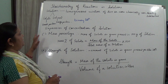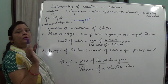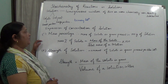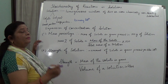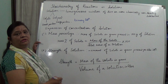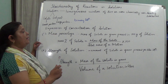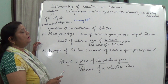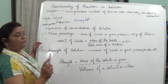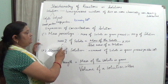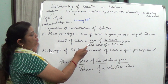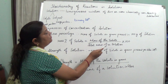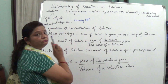Now we are going to see the expressions of concentration of solution. First is the mass percentage. Mass percentage is the mass of the solute in grams present in 100 grams of solution. The formula is: mass percentage of solute = mass of the solute upon the total mass of the solution, multiplied by 100.